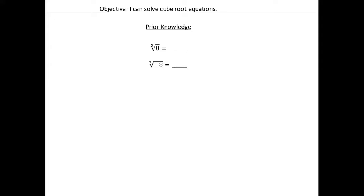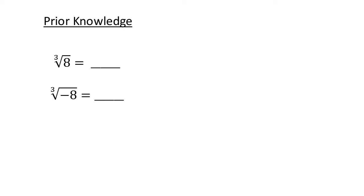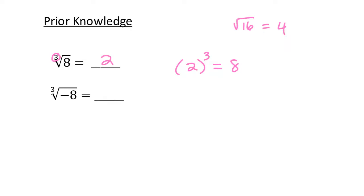Let's look at our prior knowledge. We have the cube root of 8 and the cube root of negative 8. As a side note — what does it mean for the square root of 16? We get 4 because 4 squared, 4 times 4, gives you 16. Likewise, I'm trying to figure out what number to the third power gives me 8. What number multiplied by itself 3 times gets us 8? 2 — because 2 times 2 is 4, times 2 is 8.